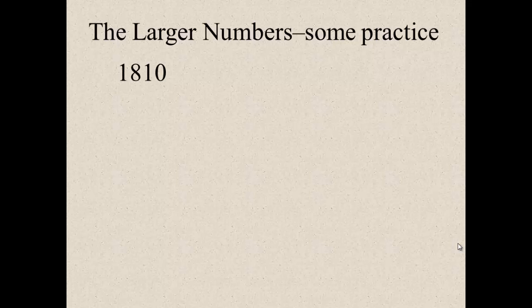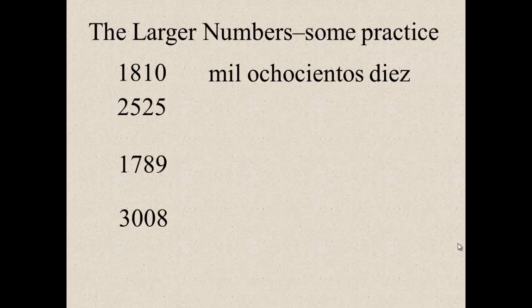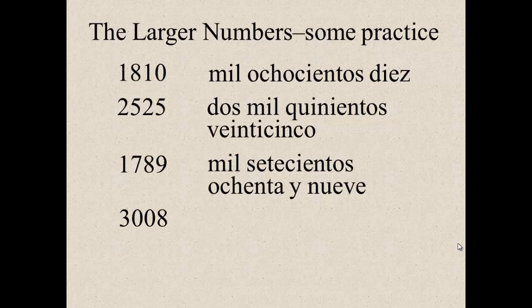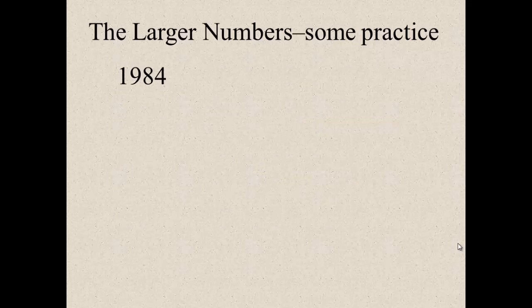Here's some practice. Eighteen ten, or rather one thousand eight hundred and ten. Twenty-five twenty-five, or rather two thousand five hundred and twenty-five. Seventeen eighty-nine, or rather one thousand seven hundred and eighty-nine. Three thousand and eight. Pause your computer and see if you can write those numbers. All right, welcome back. For eighteen ten, it's mil ochocientos diez. For two thousand five hundred and twenty-five, dos mil quinientos veinticinco. For one thousand seven hundred and eighty-nine, mil setecientos ochenta y nueve. And for three thousand and eight, tres mil ocho. Notice I didn't say y ocho. I just said tres mil ocho.